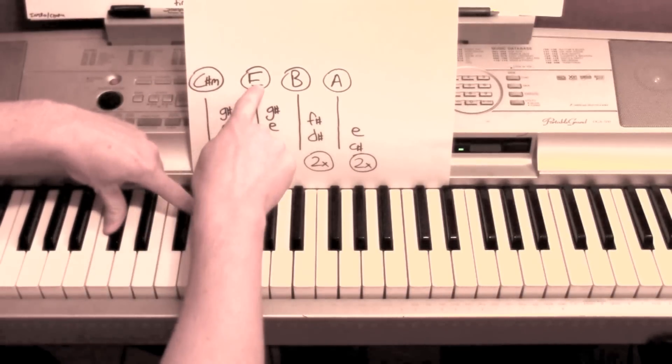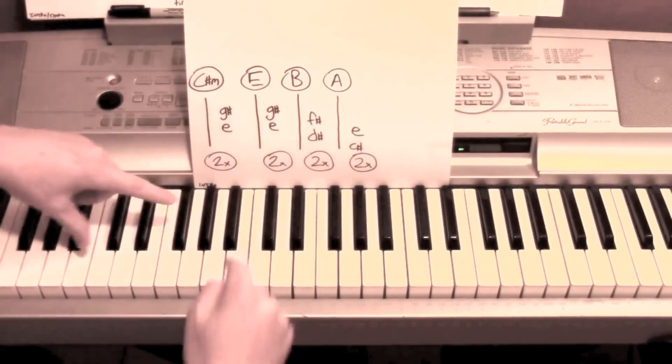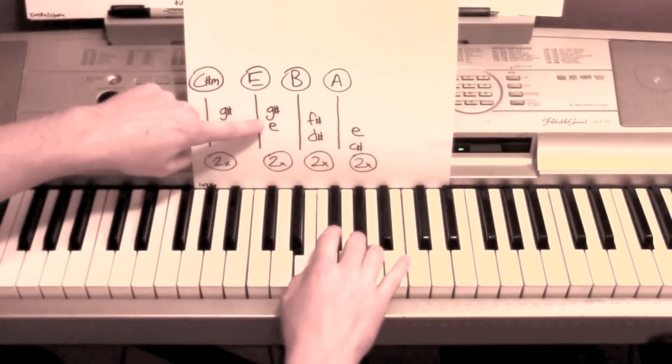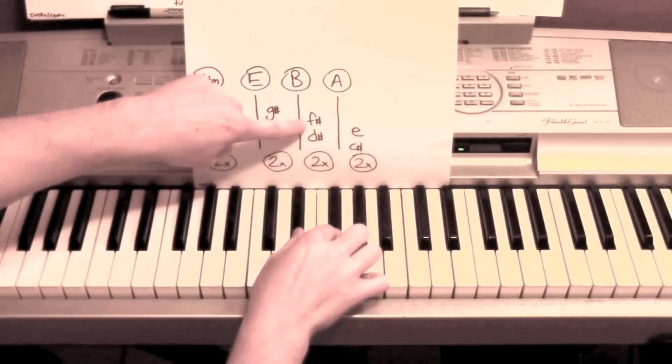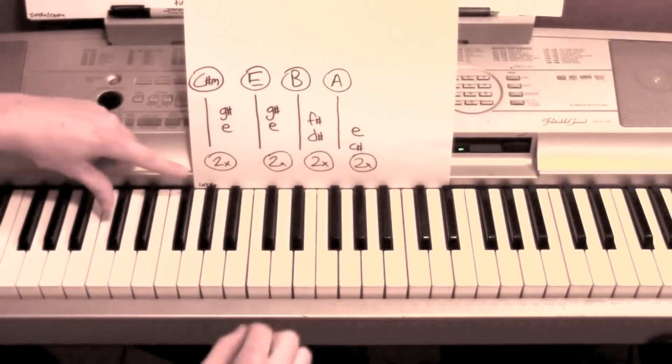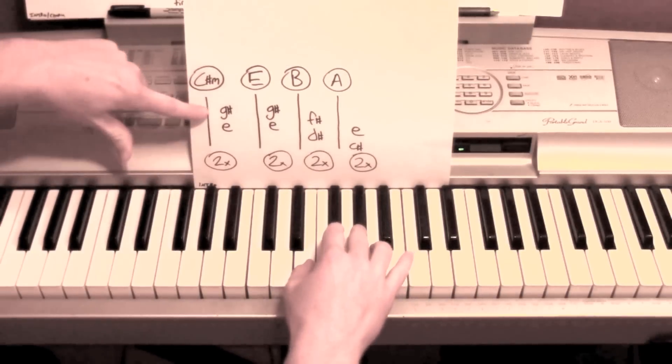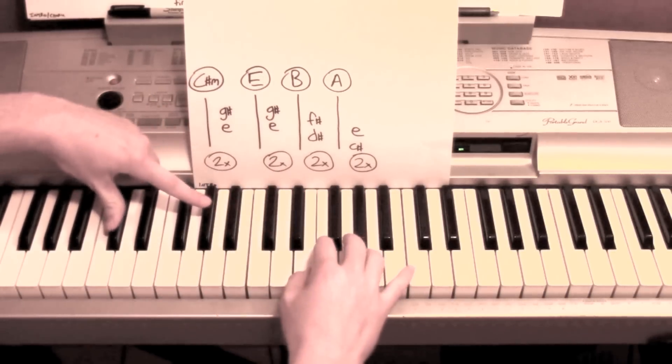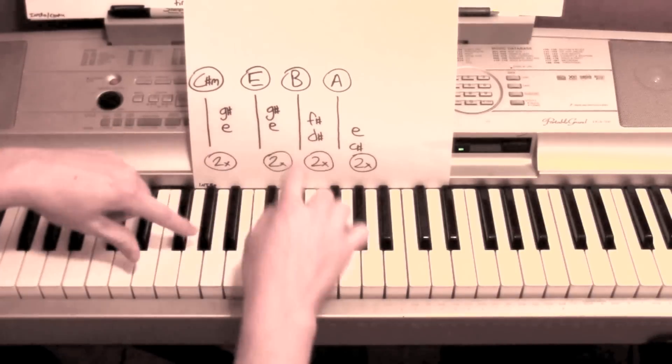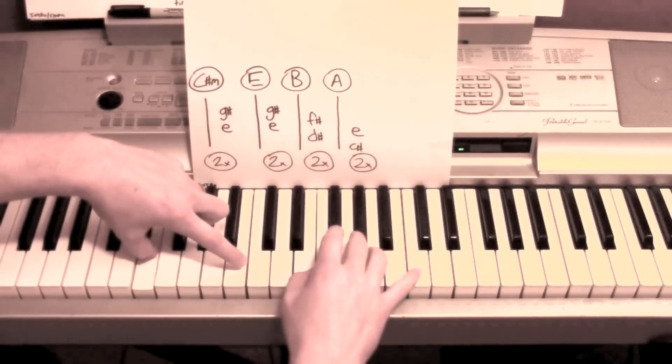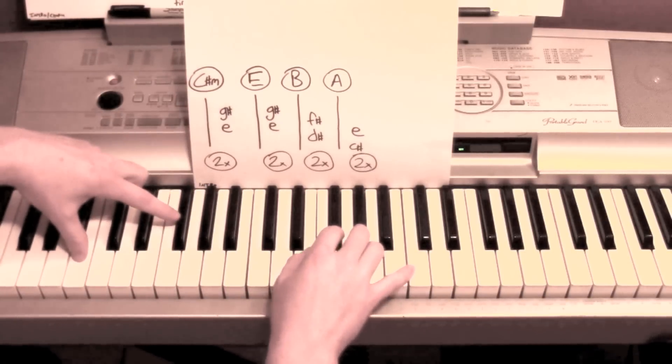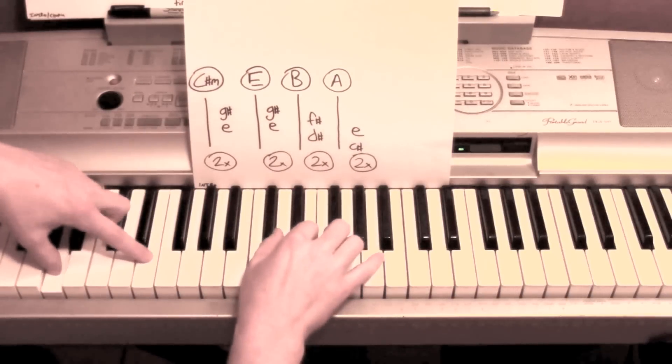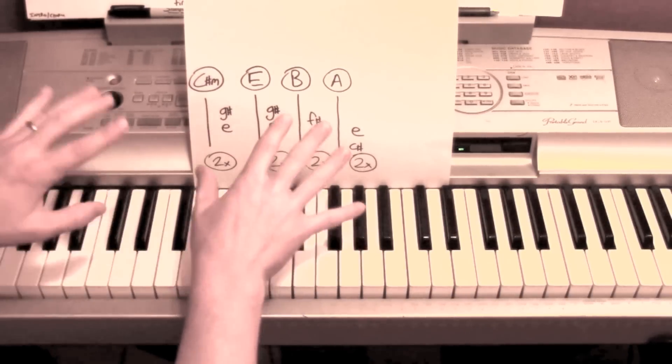So what I'm doing with the C sharp minor, my left hand is playing C sharp, those two notes. For the E I'm playing those two notes, for the B those two, and for the A those two. My right hand is playing an E and a G sharp, an E and a G sharp, D sharp and an F sharp, and a C sharp and E. What I do is I go, and then to the right hand, and then play that top note of the left hand again.